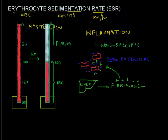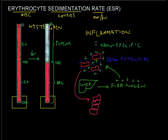With the zeta potential neutralized, these red blood cells will no longer repel each other and will start sticking together, forming little stacks of red blood cells. These stacks have a special name called rouleaux, which we can often see on a peripheral blood smear. Rouleaux stacks tend to settle much quicker, so the more fibrinogen you have, the more red blood cells stick together and form rouleaux, and the faster they settle — resulting in a higher ESR.